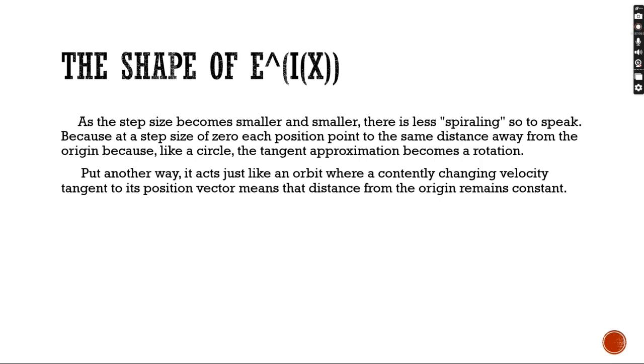But what is the shape of e to the ix? As the step size becomes smaller and smaller, there is less spiraling. And because the step size is approaching 0, each position point to the same distance away from the origin becomes like a circle, with the tangent approximation becoming like a rotation. Put in another way, it acts just like an orbit, where a constantly changing velocity tangent to its position vector means that the distance from the origin remains constant.